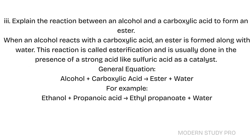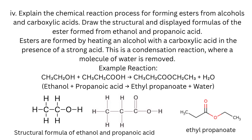Long Question 3: Explain the reaction between an alcohol and a carboxylic acid to form an ester. When an alcohol reacts with a carboxylic acid, an ester is formed along with water. This reaction is called esterification and is usually done in the presence of a strong acid like sulfuric acid as a catalyst. General equation: Alcohol + Carboxylic acid → Ester + Water. For example: Ethanol + Propanoic acid → Ethylpropanoate + Water.